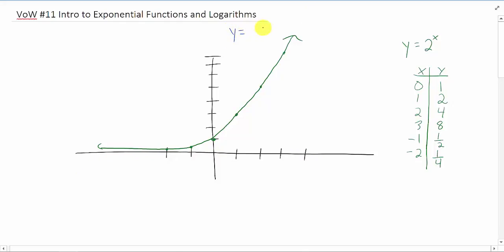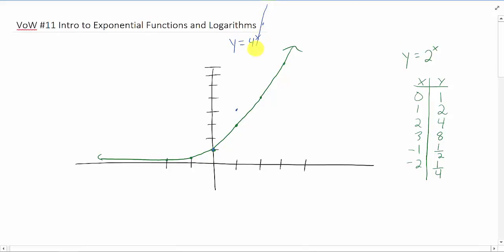You might ask the question, what does y equals 4 to the x look like? And the answer is it looks pretty similar. It's just that it grows a whole lot faster.